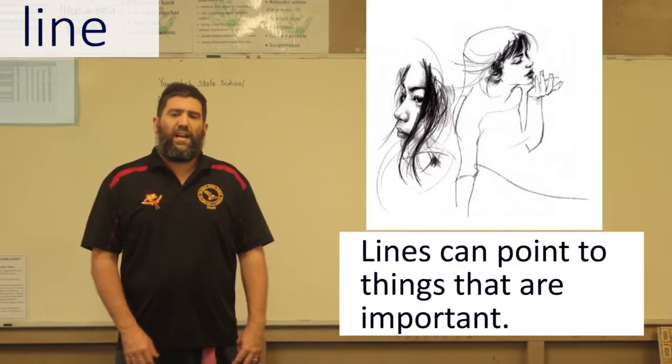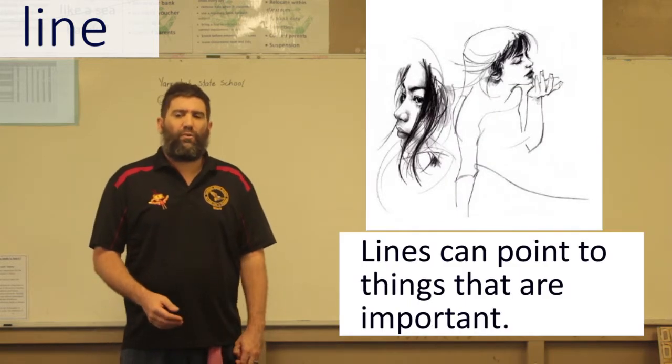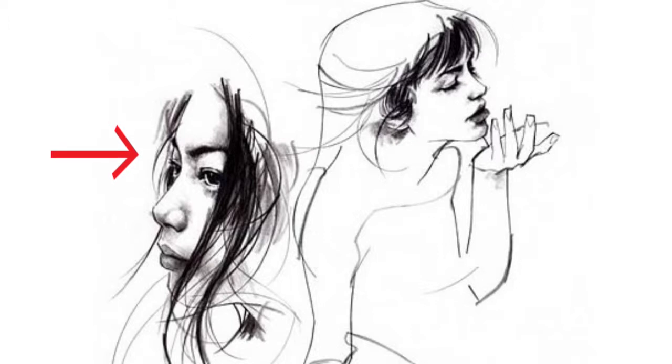Okay, the next thing we want to think about is lines can point to things that are important. So you can see here that the artist has used some really dark lines to point to what's important in these drawings, and that's the girl's faces.